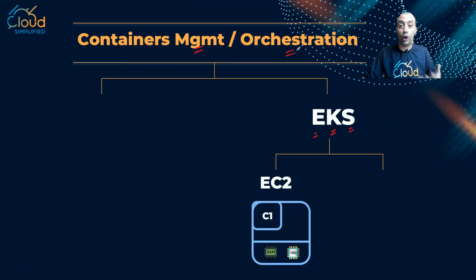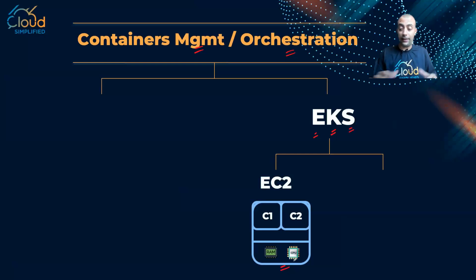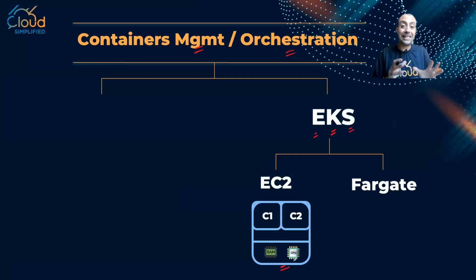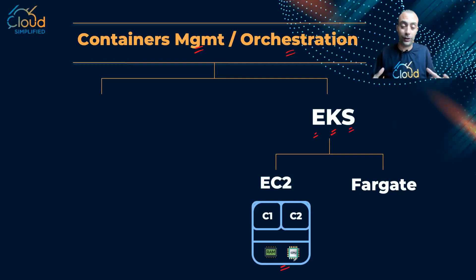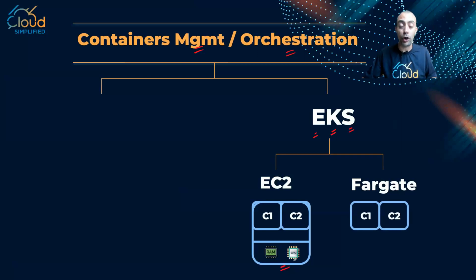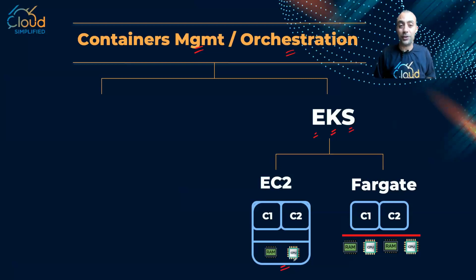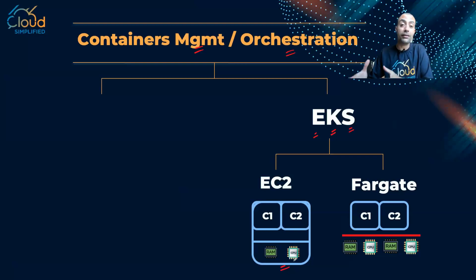The first option is to run containers on EC2 instances — I provision the EC2 instances and launch containers that take resources from that instance. The second option is Fargate, a serverless offering for containers. Just like Lambda is serverless compute, in Fargate I just point to my container images and AWS is responsible for assigning the resources those containers need. This makes sense if you already have Kubernetes on-premise and are migrating to the cloud.